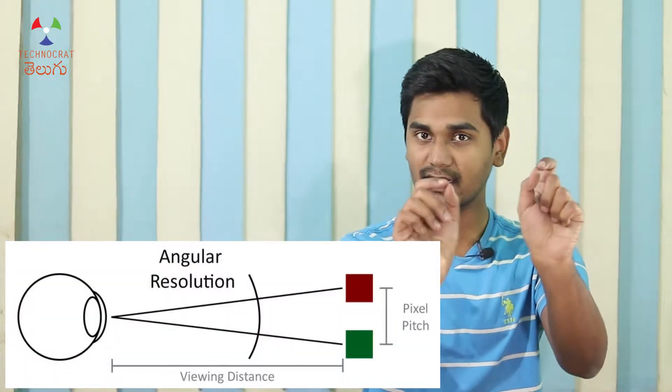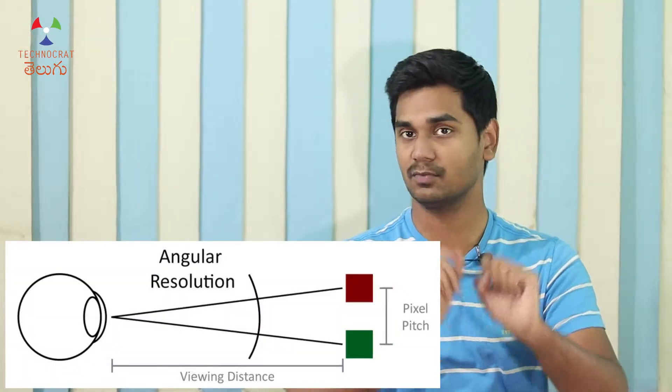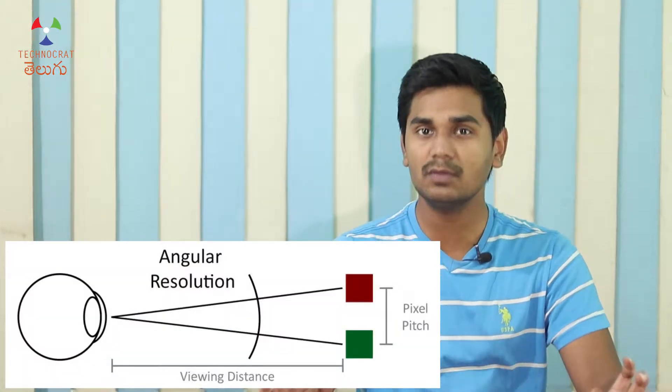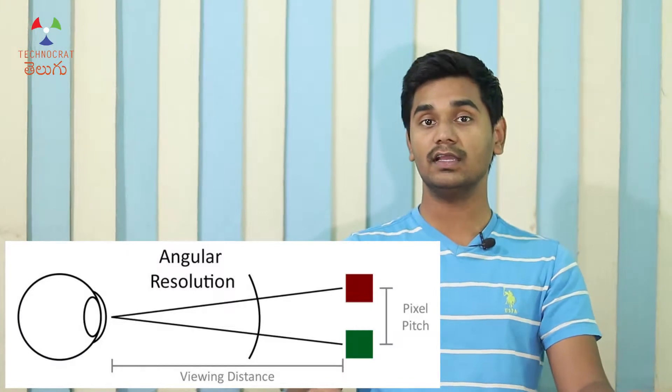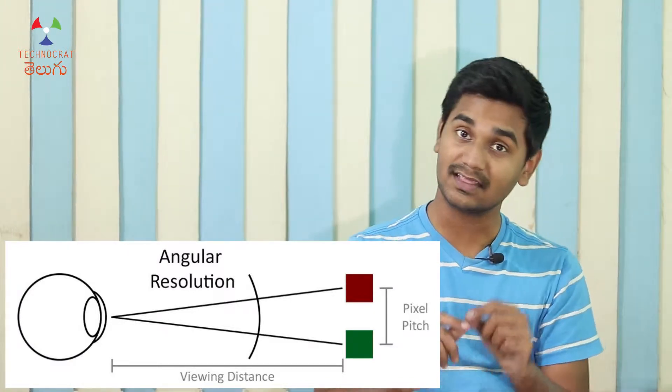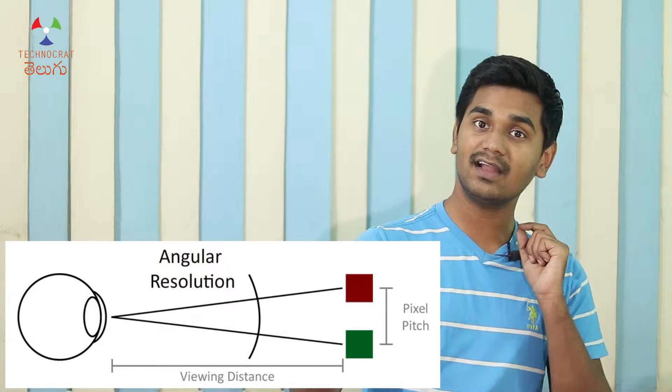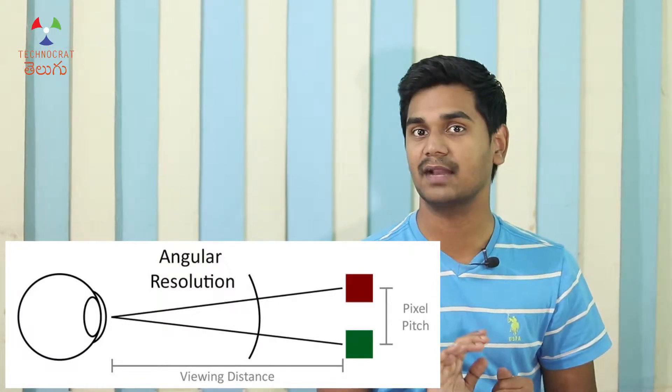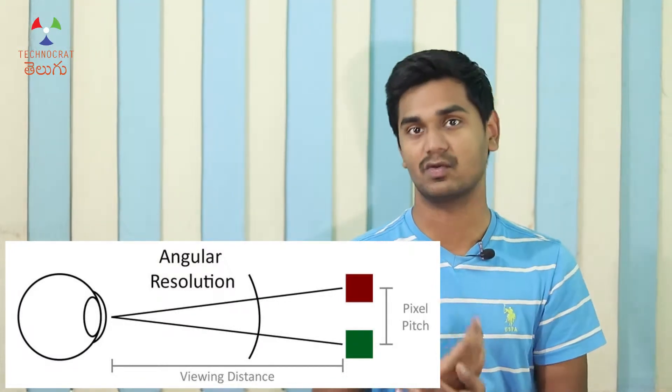Suppose you have two points on the wall. If you want to find the distance, you can find two points. If you find two points, you can find two separate points — two different points. You can find a resolution. If you use a microscope or a telescope, you can find a resolution.